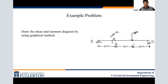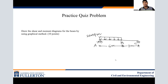We've completed this example problem. Now here is a practice quiz problem. We have again a simply supported beam with two segments. This time we have a distributed loading of 20 kilonewtons per meter between points A and B. The first segment is 6 meters and the next segment is 3 meters. I hope this video is enjoyable and you can easily apply this method to solve shear force and bending moment diagrams using the graphical method.